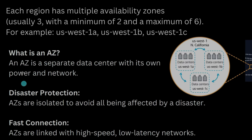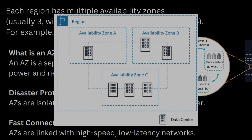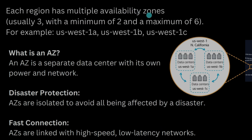So what are availability zones? An AZ is a separate data center with its own power and network, present inside a region. Each region has multiple availability zones — usually three, with a minimum of two and a maximum of six. North Virginia has six AZs. For example, in North California (US West 1) you have three AZs: US West 1A, 1B, and 1C — that is how AZ naming works.